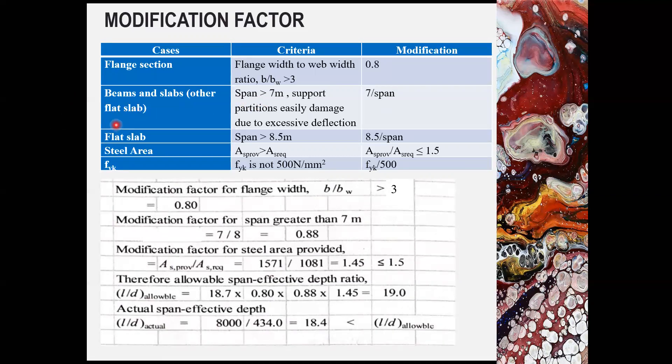So in beams and slabs, if the span is greater than 7 meter or indication of support partition easily damaged due to excessive deflection, so you need to use the modification 7 divided by the span you have. And if you are designing a flat slab, when the span is greater than 8.5 meter, you need to use the modification 8.5 divided by the span.